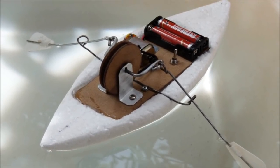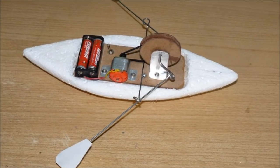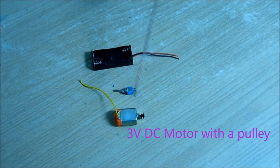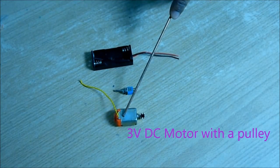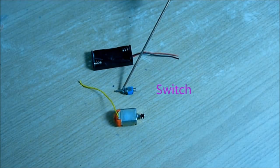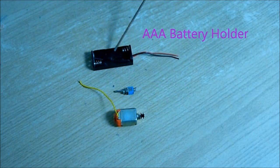Hello there, we are going to make this rowing boat. For this you need a DC motor with a small plastic pulley, one switch, and one AAA battery holder.